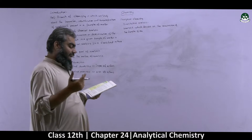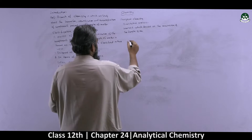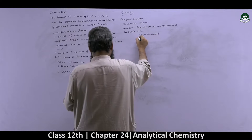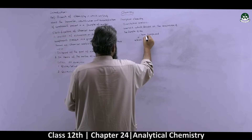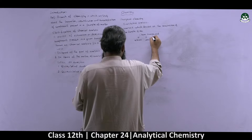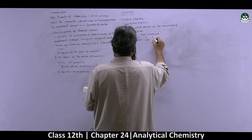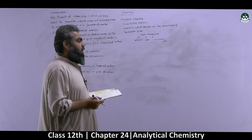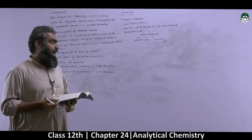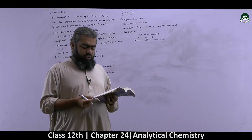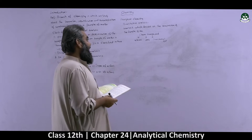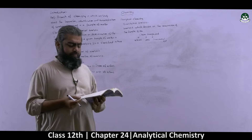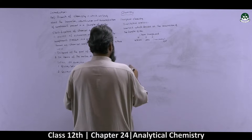In qualitative analysis, you can find out — for example, if you are given a chemical compound — the atoms or ions present in it. The third important thing is the presence of functional groups in the case of an organic compound. So type of atoms, ions, or functional groups within a chemical compound are analyzed through qualitative analysis.